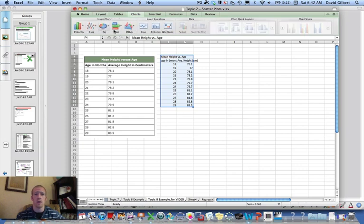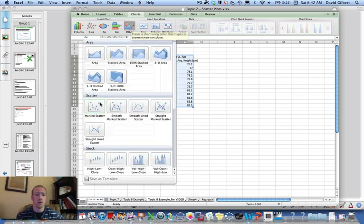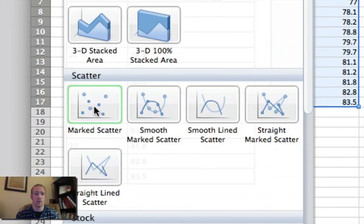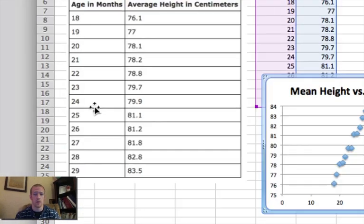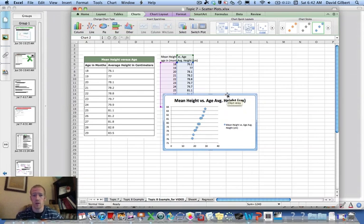And I want, oh it doesn't give me what I want here. I want marked scatter. So we go to other, marked scatter is what we're looking for. So you want this one. Click that and it makes your chart for you right there.